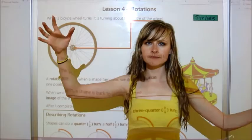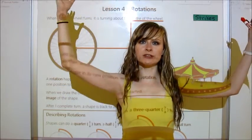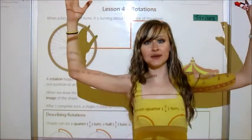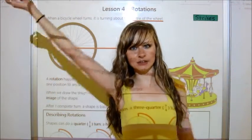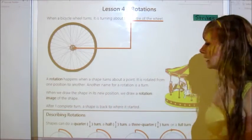After one complete turn, a shape is back to where it started. So let's just pretend that the middle of me is a rotation. So once I turn all the way around, I've done one complete turn, and I turned about my head, I guess, or my feet.